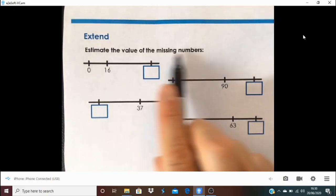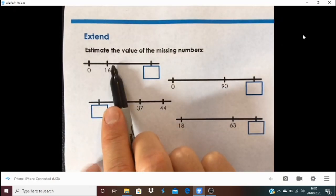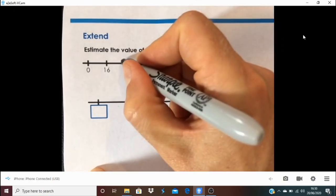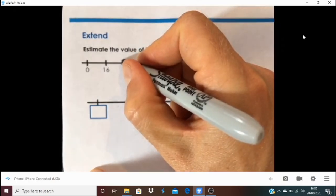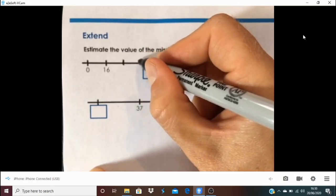So here we were thinking estimate the value of the missing numbers and we've got 0 to 16. Well I'll tell you what I did here for my estimate and of course it is just my estimate.